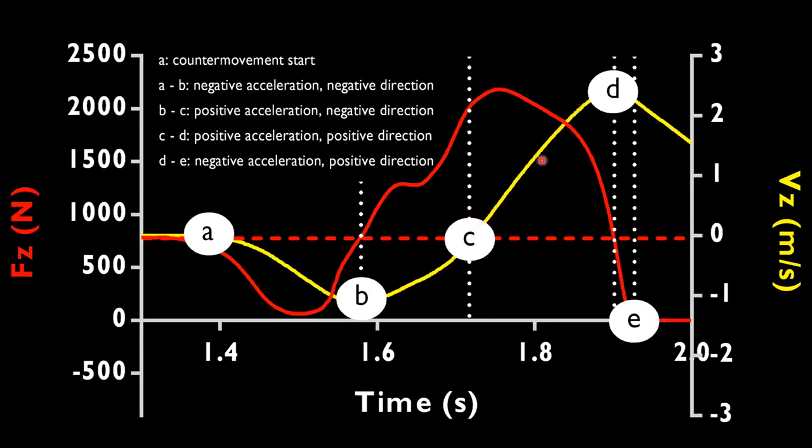So at this point here, this is our transition from down to upward movement. Again, we've got positive acceleration because the slope of the velocity-time curve is increasing, but now we know that because it's above zero, we have got a positive direction as well. That jumper is now pushing against the ground and moving to this point here, point e, where he leaves the ground. We then have a brief period between d and e where we've still got some positive movement—the jumper is still moving upwards before he leaves the ground—but we've got some negative acceleration as we see the slope of the velocity-time curve starts to decrease.